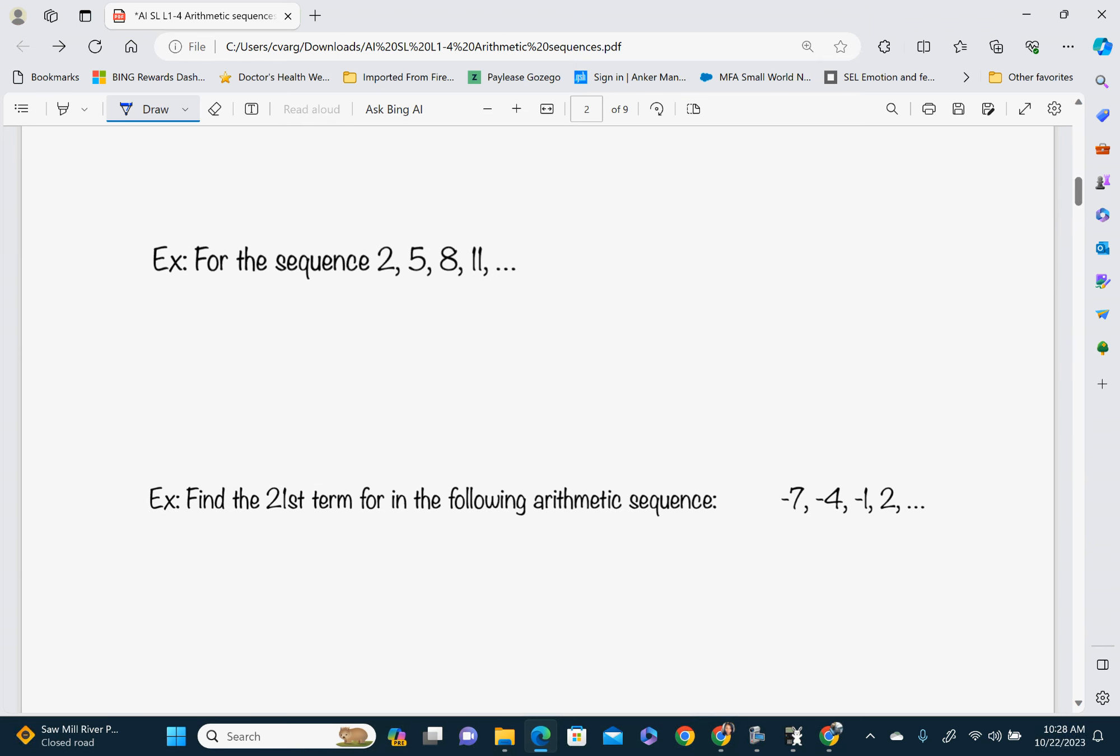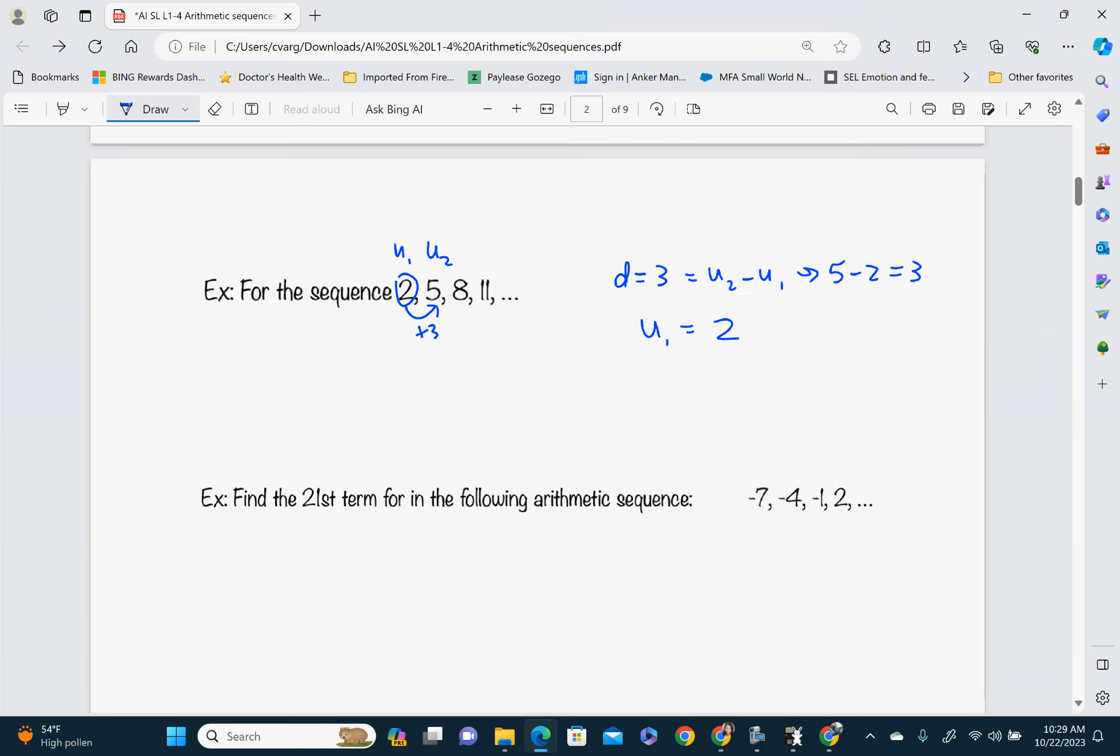So for the sequence below, our sequence here, which is 2, 5, 8, 11, we already know that our common difference is 3. This is going up by 3. So our difference is 3. And if you can't find it, an easy way to do it is to take U2 and subtract U1 from it. This is going to equal U2 minus U1. So 5 minus 2 is equal to 3. In this case, it's pretty easy to find our D. Our U1, we talked about that. It's just our first term, which is just 2.